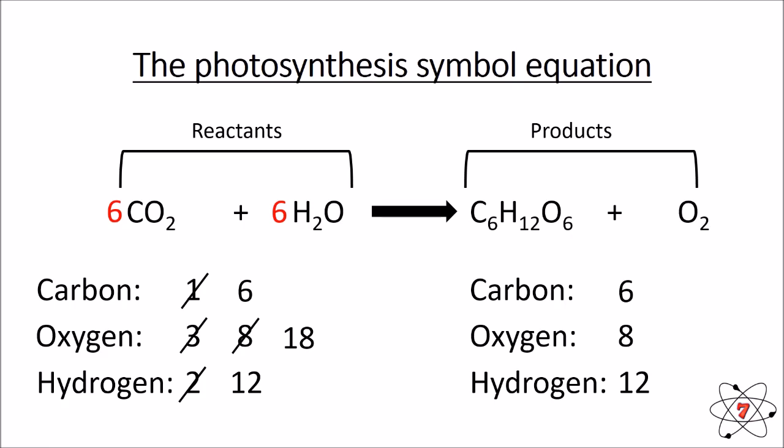The only way to balance elemental oxygen is to adjust it directly, without changing carbon or hydrogen counts. The six oxygens within glucose must stay. Eighteen minus six = twelve, so I need twelve oxygen atoms from O₂ on the product side. I multiply O₂ by six: six times two = twelve. So six oxygens in glucose plus twelve in O₂ = eighteen, matching the reactant side. The balanced equation is: 6CO₂ + 6H₂O → C₆H₁₂O₆ + 6O₂.